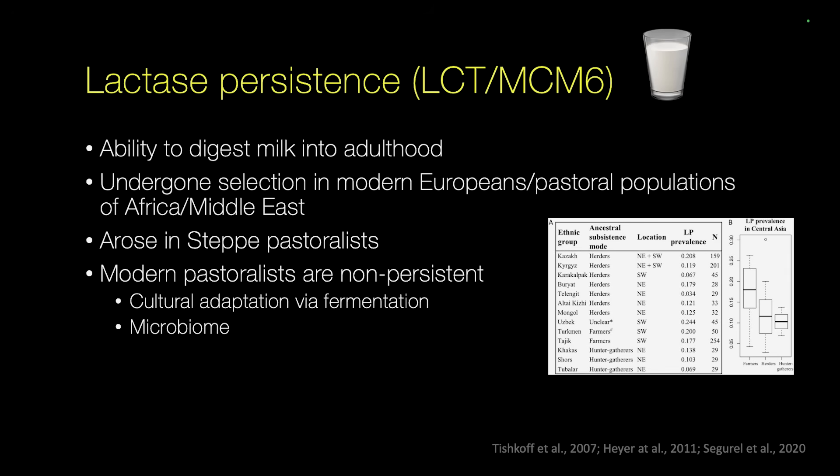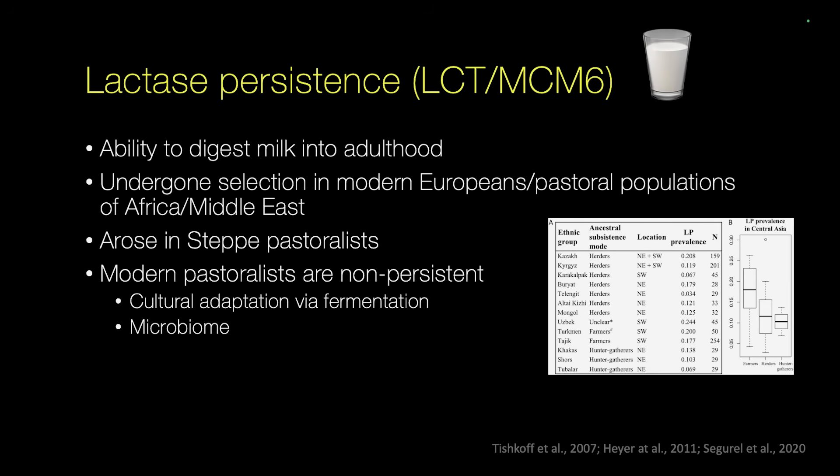The last well-known phenotype associated with dietary and cultural change is lactase persistence — the ability to digest milk — which has undergone selection in modern Europeans and pastoral populations of Africa and the Middle East. One variant known in modern Europeans arose in steppe pastoralists. However, when we look at modern Central Asian populations, we don't see high levels of lactase persistence. This is an example of cultural adaptation: milk is not consumed raw but is fermented into kefir, ayran, and yogurt, and the microbiome may also play a role.